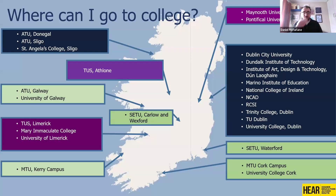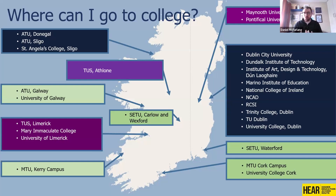You might be wondering what colleges are involved. The HEAR scheme isn't just a passport to one college — it covers all colleges in Ireland, including ATU Donegal, Sligo, ATU Galway, University of Galway, TUS Athlone, SETU Carlow and Wexford, TUS Limerick, Mary Immaculate, UL, MTU Kerry, MTU Cork, UCC, SETU Waterford, and all Dublin-based colleges. So there are loads of opportunities right across the country.